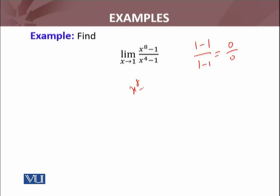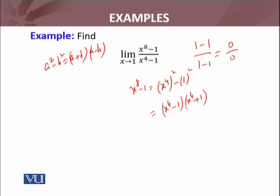Here you can see x⁸ minus 1, I can write it as (x⁴)² minus 1². I know that a² minus b² equals (a+b)(a-b). So that will factorize this one: x⁸ minus 1 becomes (x⁴ minus 1)(x⁴ plus 1).